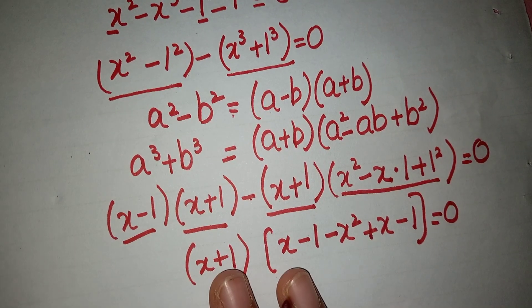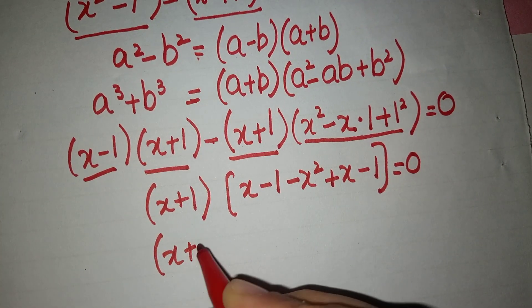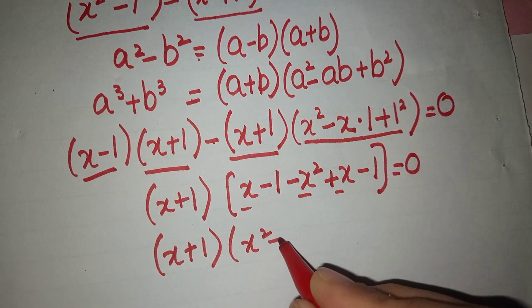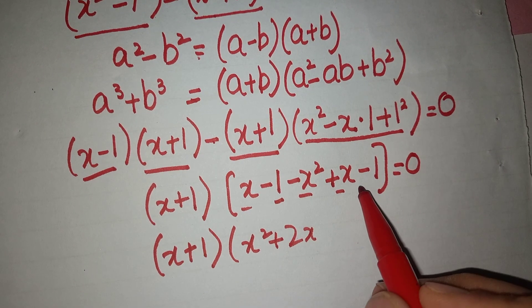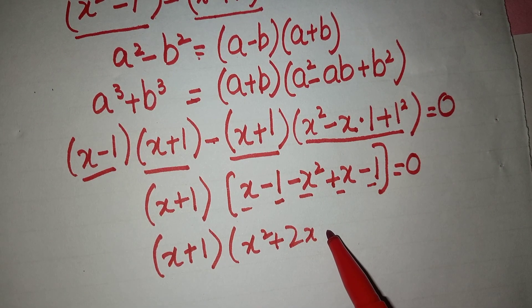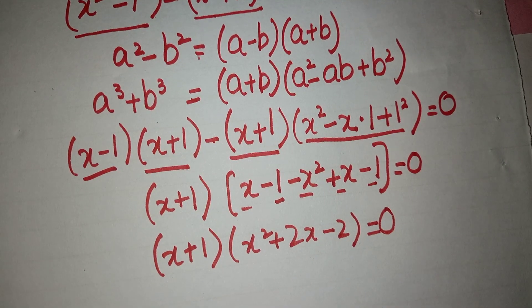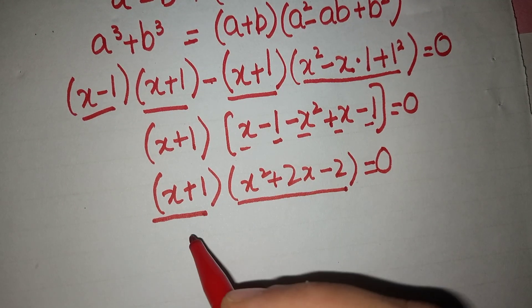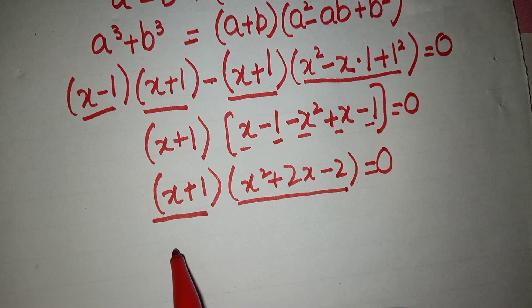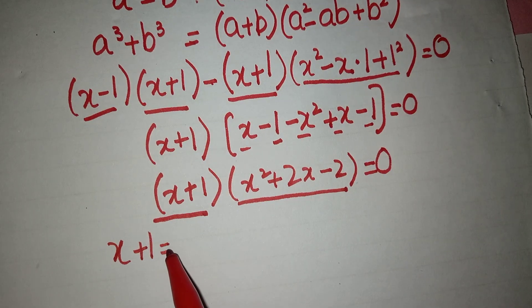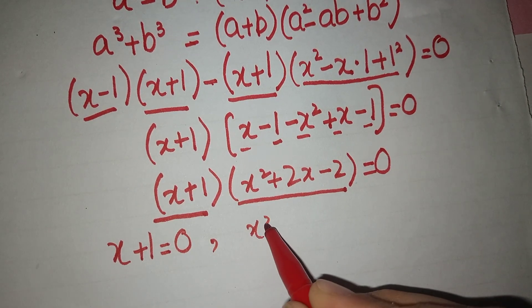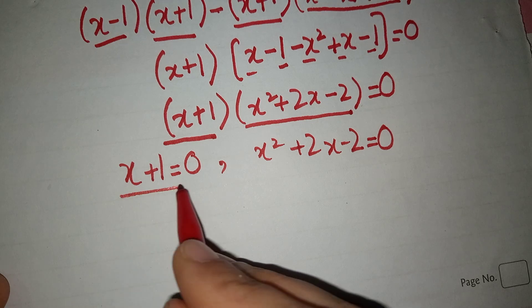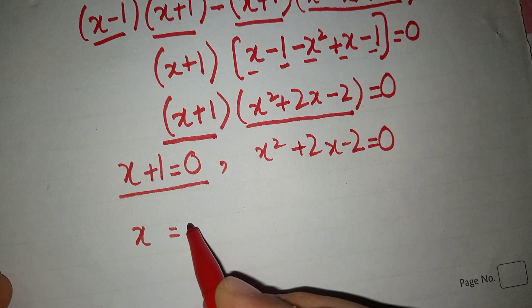We now have two factors. Setting x plus 1 equal to 0 gives x equals minus 1. The second factor gives minus x squared plus 2x minus 2 equals 0.